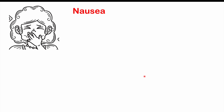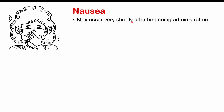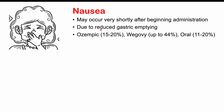One of the most common side effects is nausea, which occurs shortly after beginning administration of these medications, essentially due to reduced gastric emptying — more food sitting in the stomach causes patients to feel nauseous. Reported rates of nausea: Ozempic 15–20%, Wegovy up to 44%, and Rybelsus 11–20%. A common theme is that Wegovy, the higher-dose formulation, tends to produce the most side effects.